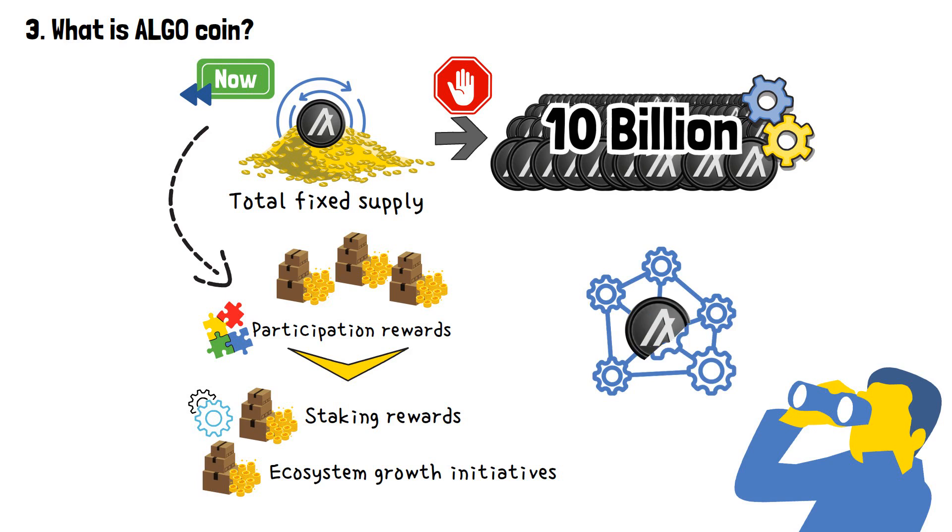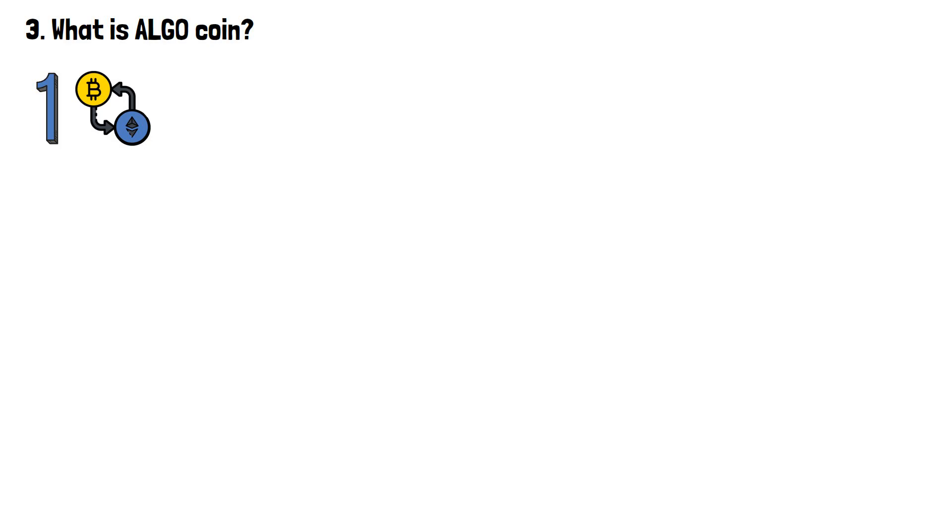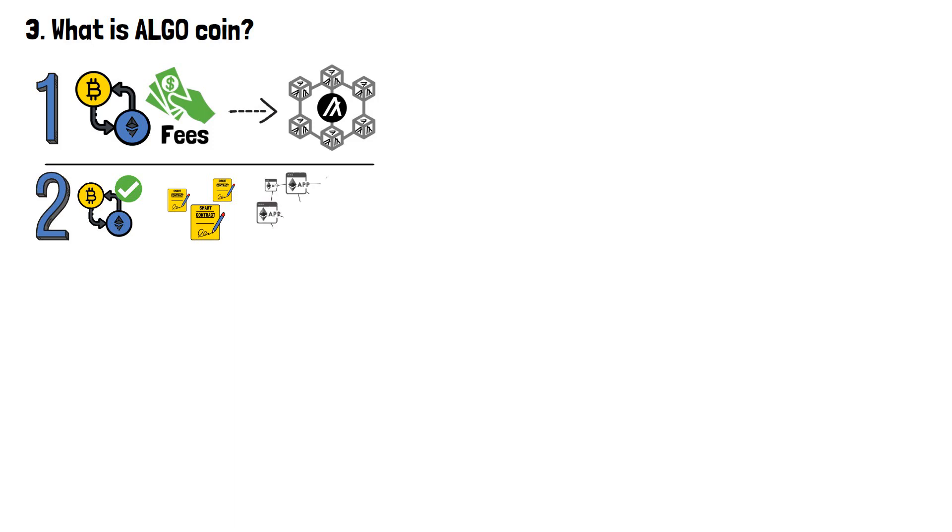Now, let's explore the multifaceted role that Algo plays within the Algorand system. First and foremost, Algo serves as the means to pay transaction fees on the network. Whether it's validating transactions, executing smart contracts, or engaging with decentralized applications, users rely on Algo as the medium of exchange, ensuring the smooth functioning of the Algorand ecosystem.